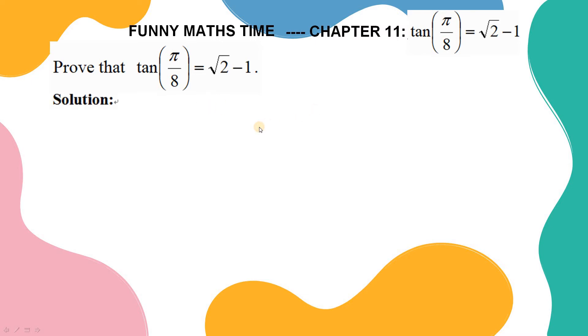Here is the solution. First we recall a very important trigonometry compound angle formula: tangent 2A equals 2 tangent A over 1 minus tangent squared A. This is a famous double angle formula for tangent.